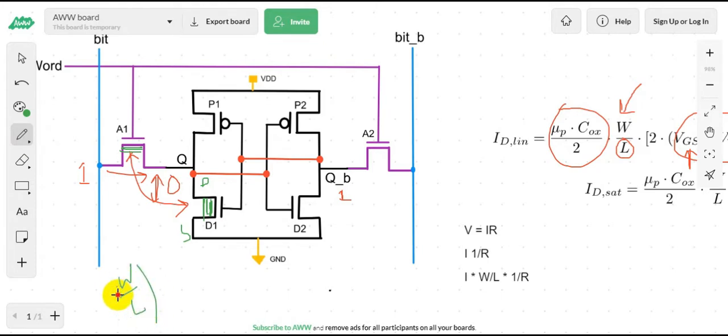Width by length ratio of D1 should be greater than the width by length ratio of the A1 transistor, or you can say...